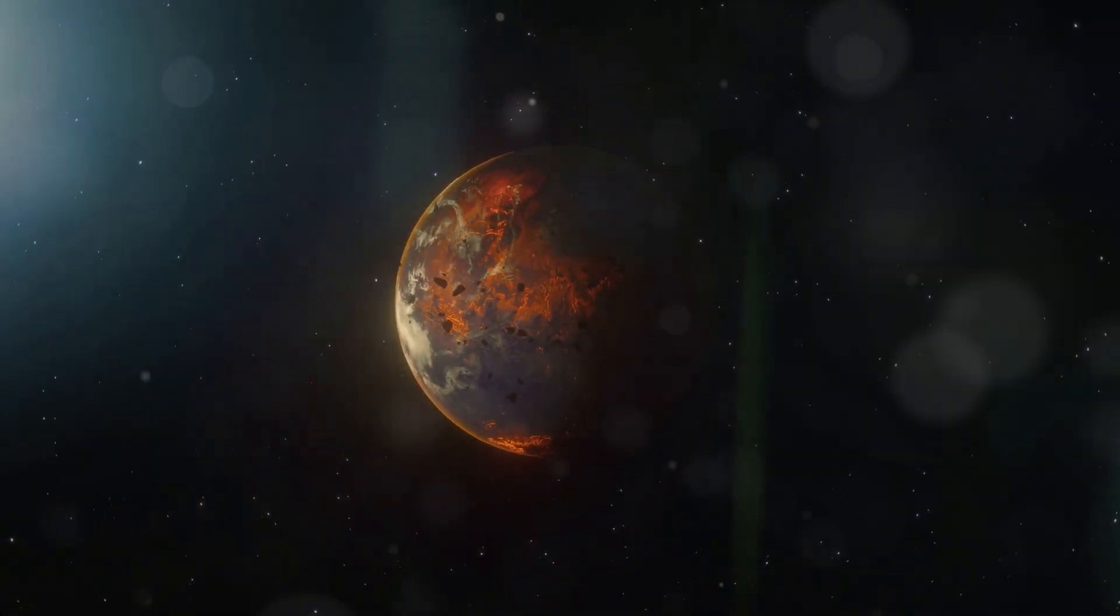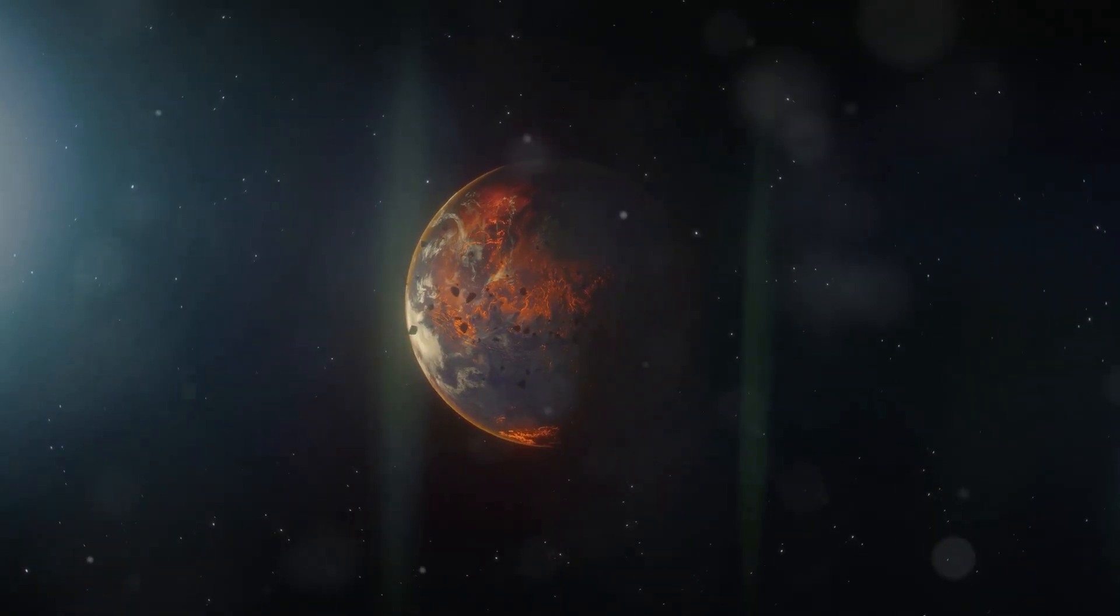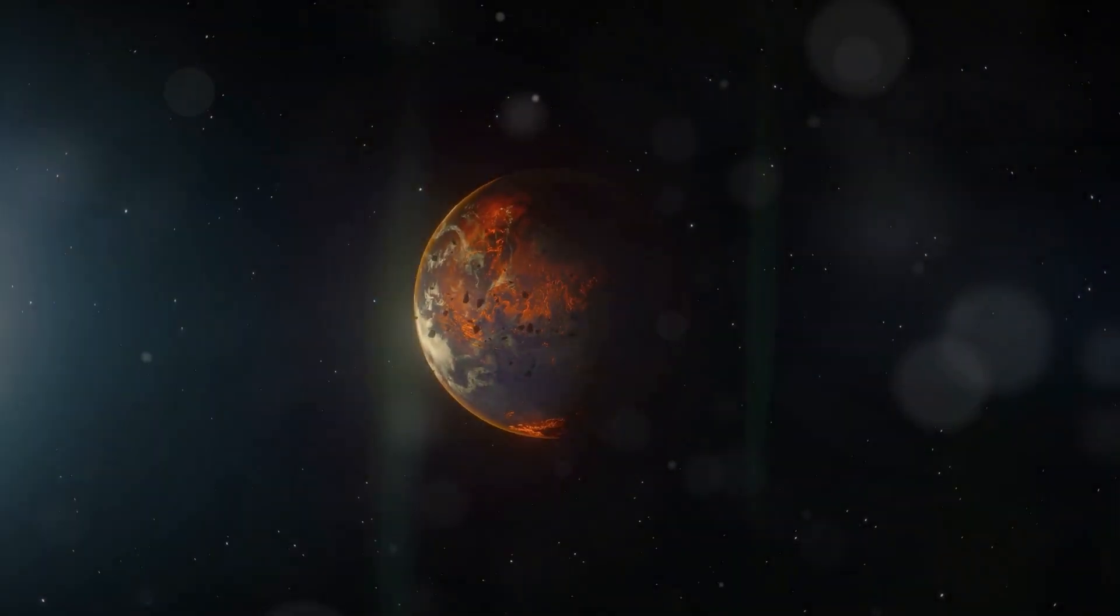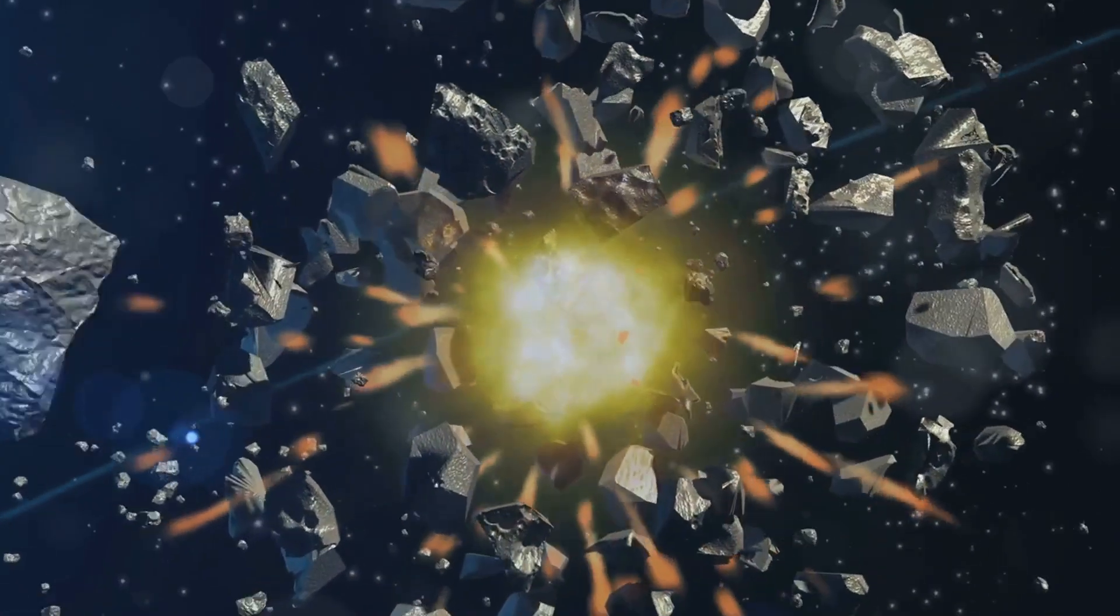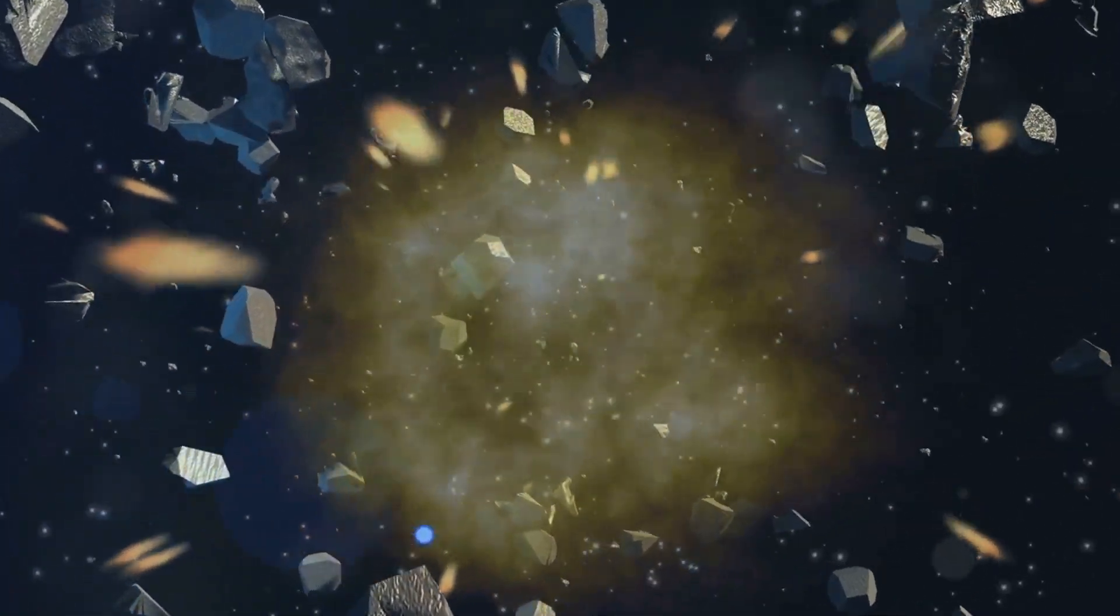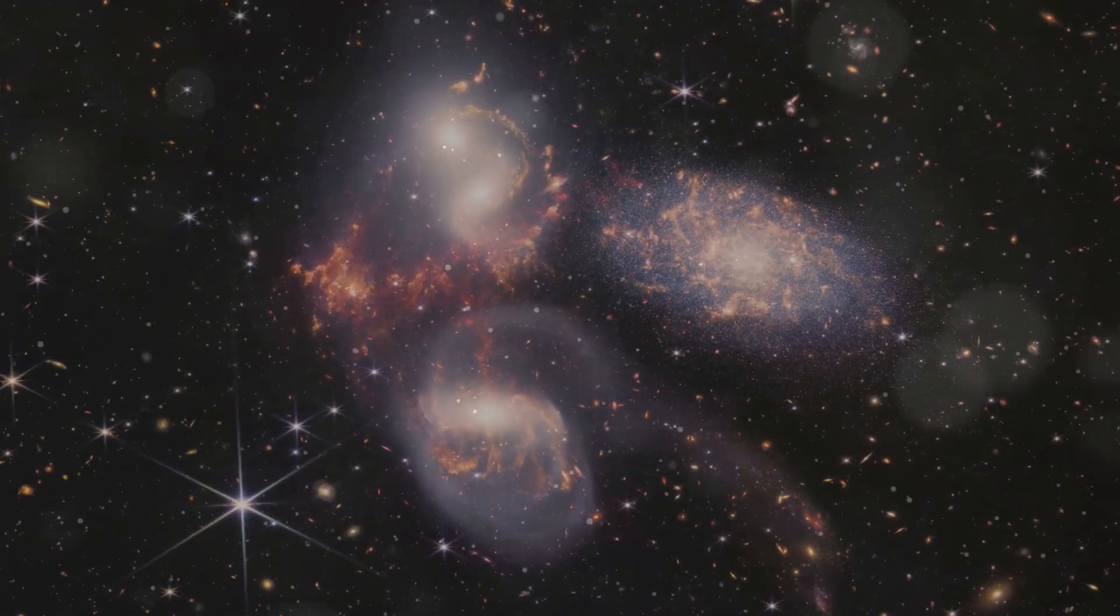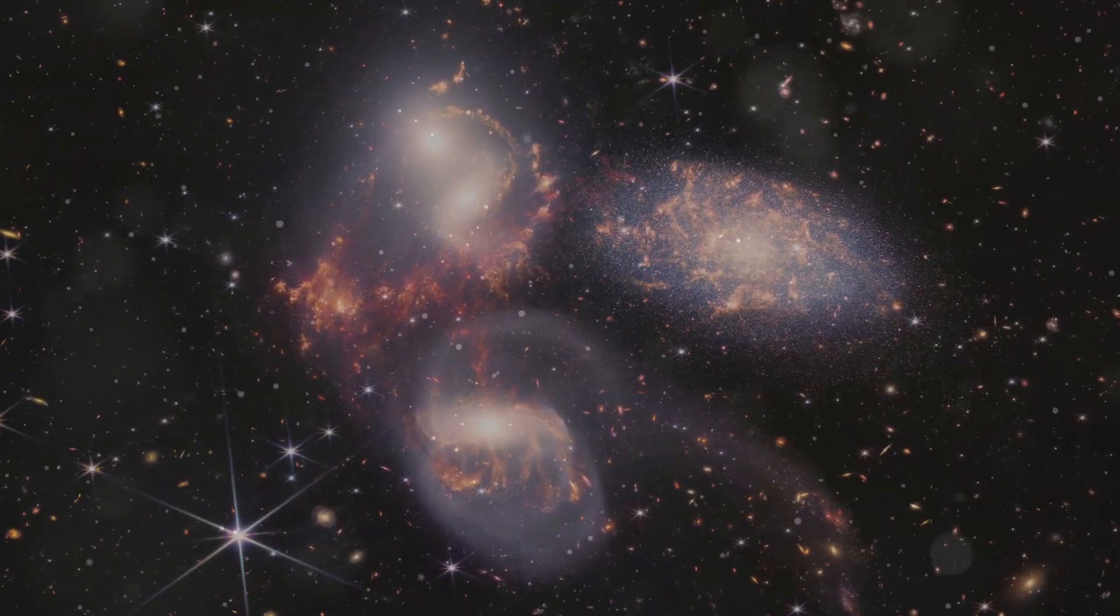Over millions of years, the planetesimals in the proto-planetary disk continued to collide and grow, their orbits crossing and intertwining in a complex cosmic dance. Some collisions were destructive, shattering these planetary embryos into smaller pieces, but others were constructive, merging them into larger and larger bodies.